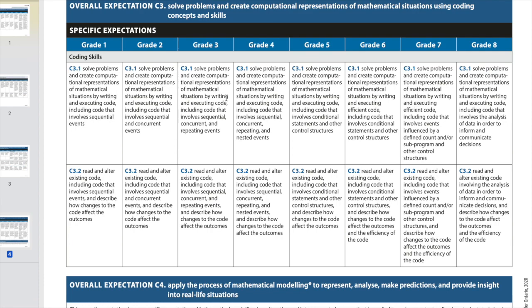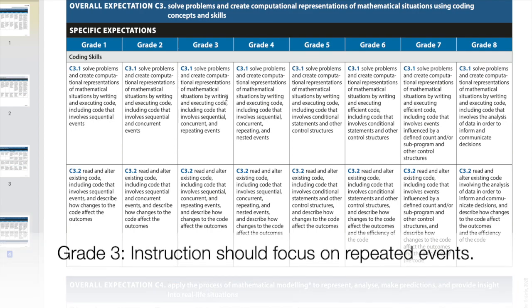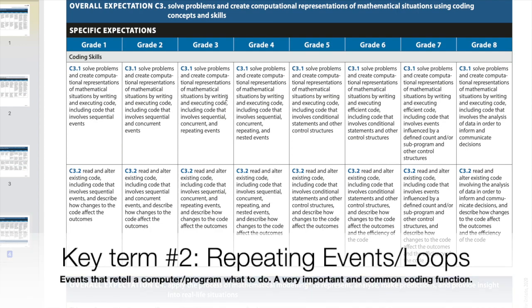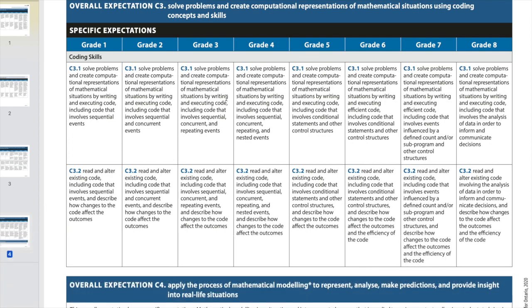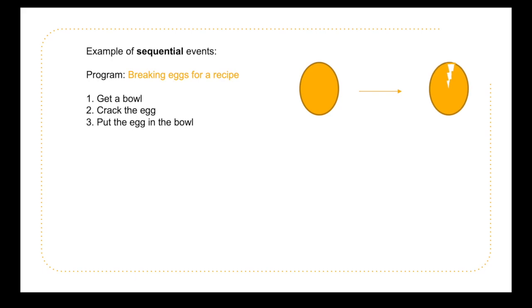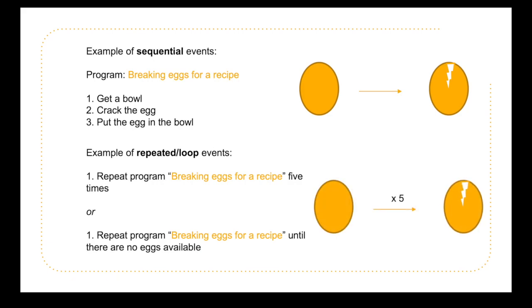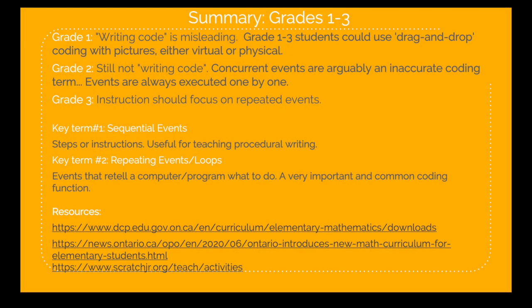Grade three introduces sequential, concurrent, and repeating events — this is where we get into loops. Loops are one of the foundations of doing anything meaningful in computer programming. Whenever you want to do something repeatedly, like registering a mouse click every time, you need those repeating events. Going back to the cookbook analogy: break five eggs — you get your egg, crack it, open it, spill the contents into the bowl, and repeat. You can say do that five times, or loop while the number of eggs is greater than zero, until the number of eggs equals zero.